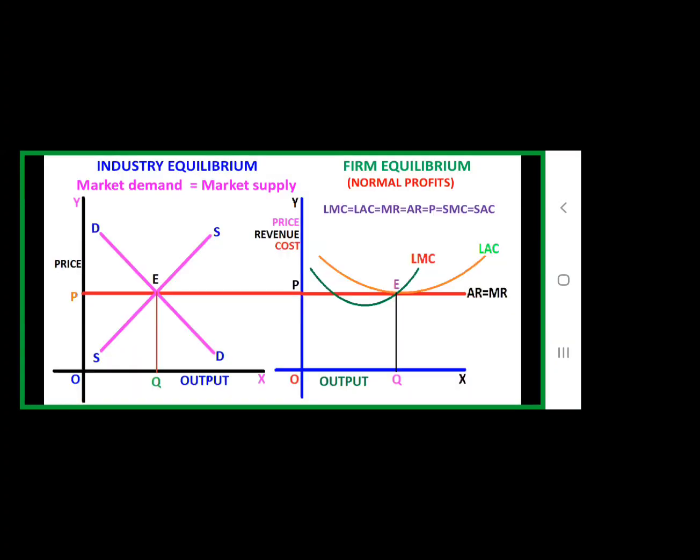This graph shows the normal profits graph — on the left side, market demand, market supply, and industry equilibrium. During the long run, all firms will earn only normal profits, so that the number of firms will be stable, constant, and unchanged.